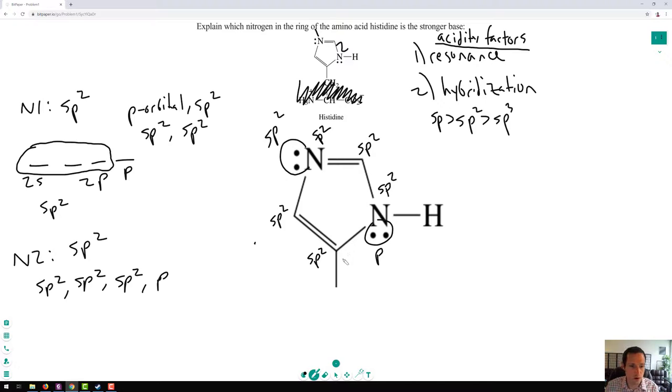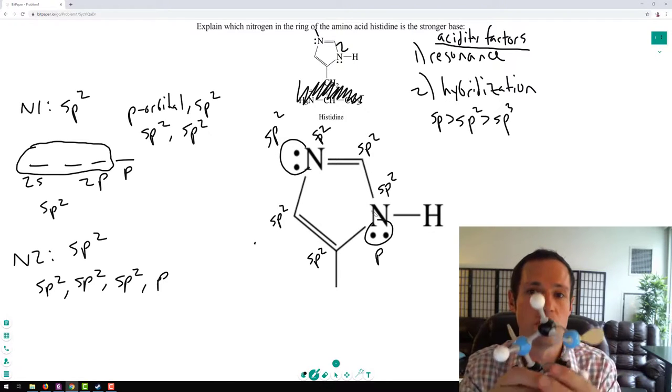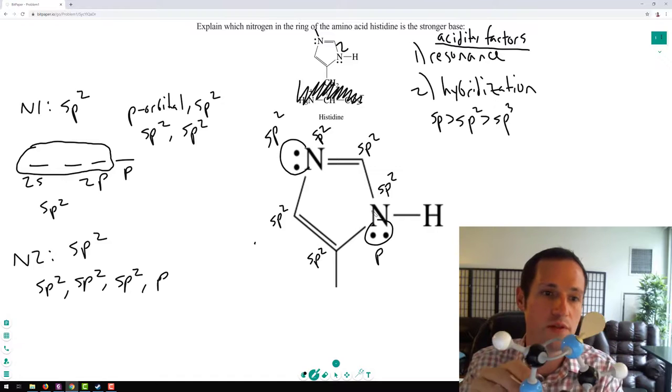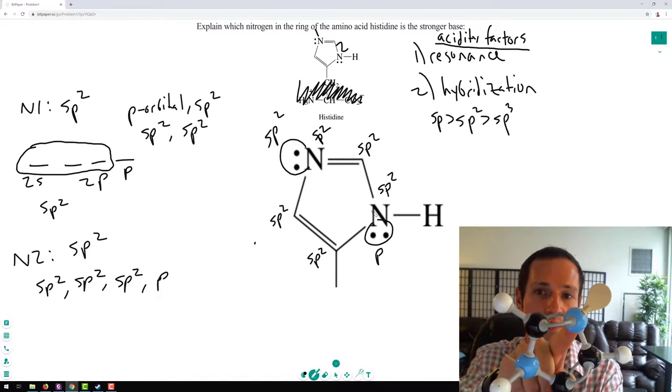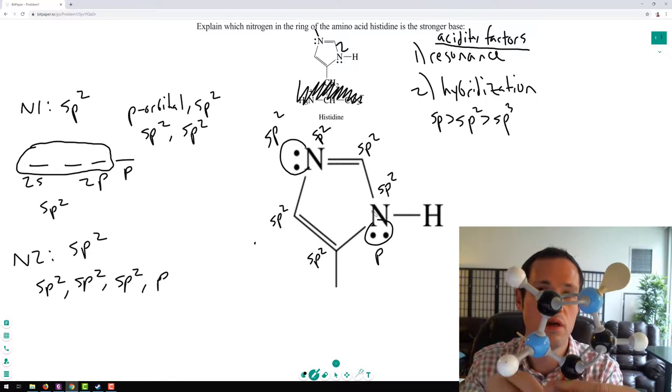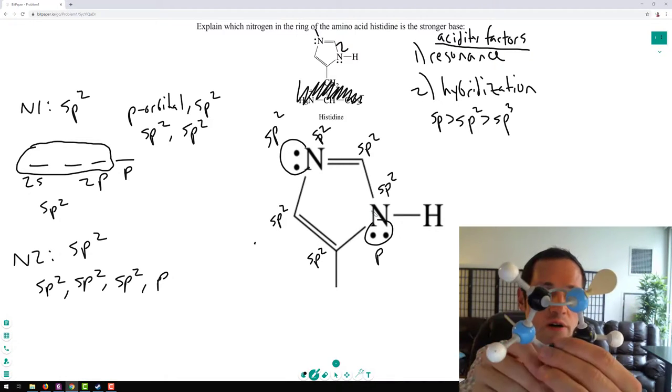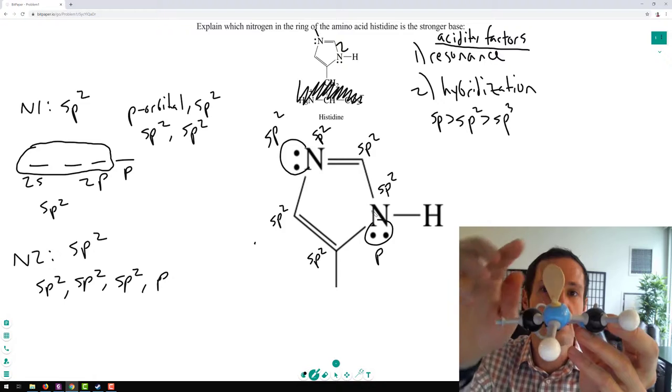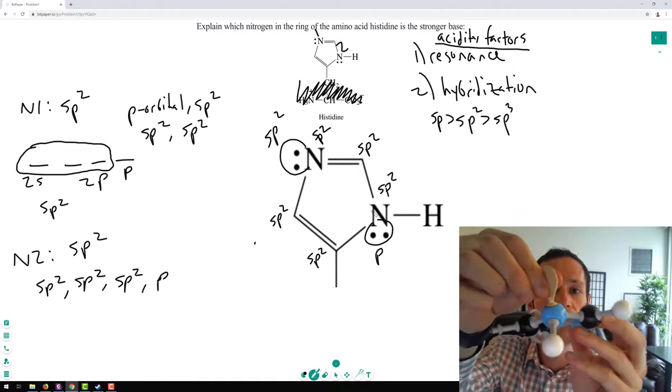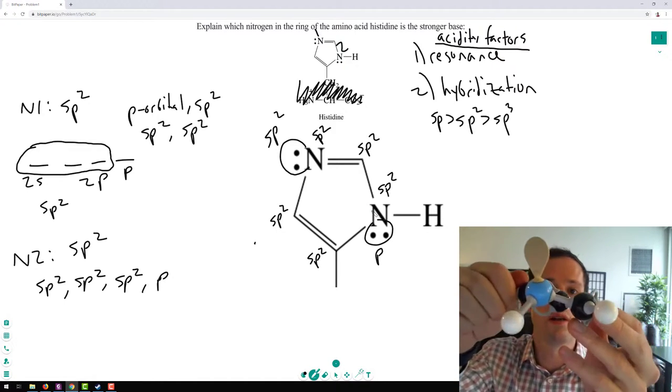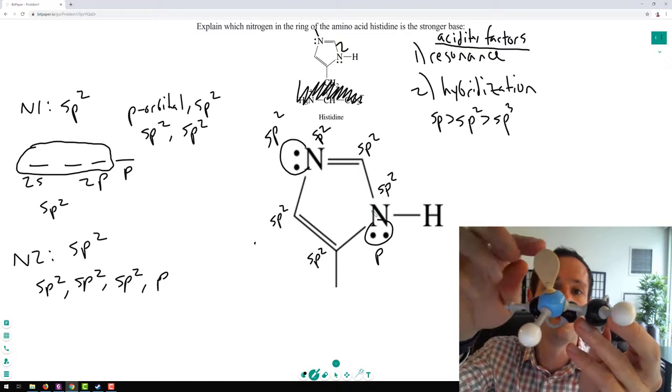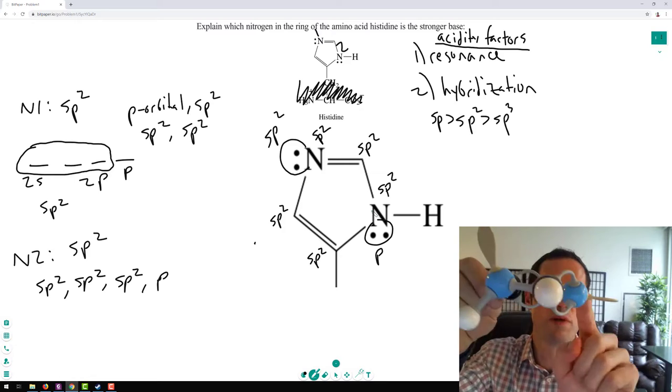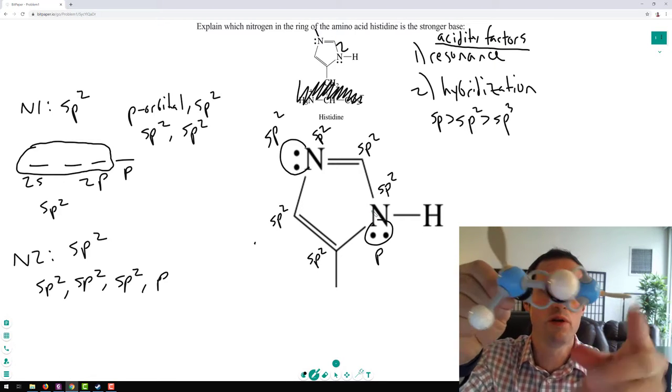We can sort of see this another way visually through our model kits. So I've actually built this histidine ring for you guys. So this is nitrogen 2, this is nitrogen 1, this is the rest of the histidine molecule. So we can see how it's planar, like a piece of paper, it's planar. You can see that the lone pairs, these little dog ears here, are located in different areas. This one's popping out of the ring, whereas this one's popping adjacent to the ring, parallel to it. This is perpendicular.